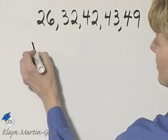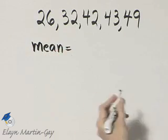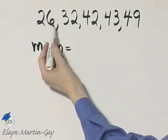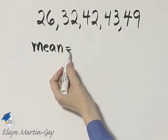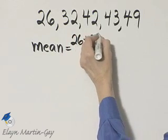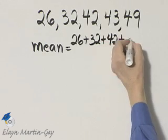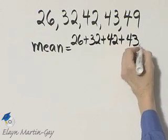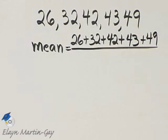So how do we find the mean? These are three measures of central tendency. We find the mean by finding the sum of the numbers over the number of numbers. So 26 plus 32 plus 42 plus 43 plus 49 over, how many numbers do we have?